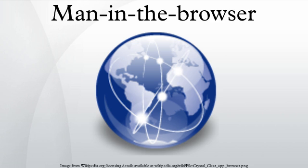The name man in the browser was coined by Philip Garwin-Cortering on January 27, 2007. MITB Trojan works by utilizing common facilities provided to enhance browser capabilities such as browser helper objects, browser extensions, and user scripts.